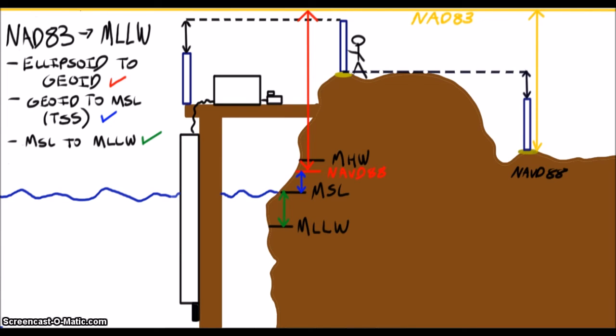The geoid is modeled from gravity data and tied into the benchmark network. The sea surface topography is modeled from global altimetry data and the mean sea level datums at all the tide gauges. Finally, the difference between mean sea level and mean lower low water is calculated using hydrodynamic models that account for the effect of the shoreline and bathymetry on tides.